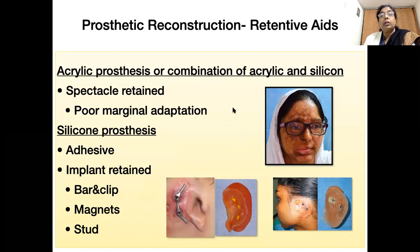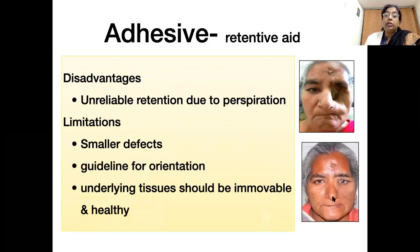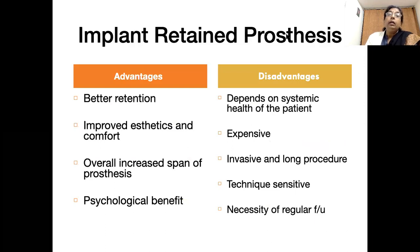We can retain these prostheses with the help of spectacles, adhesives, or implants. In case of spectacle-retained prostheses, marginal adaptation is compromised because the prosthesis moves with the spectacles. Adhesives provide good retention, but it is not reliable because perspiration can cause the prosthesis to come out. Adhesives are mainly effective when the defect is small, the underlying tissue is not movable, and the border is large and healthy. Where adhesive cannot be used, implants can be very well used because they provide better retention.